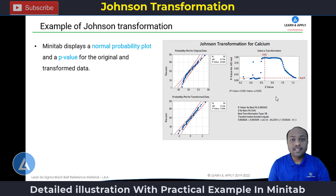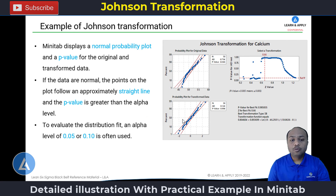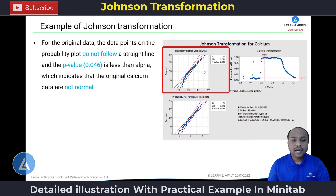The results contain two probability plots — one for the original data and one for the transform data — along with their p-values. Minitab displays a normal probability plot and a p-value for both. If the data are normal, the points on the plot follow an approximately straight line and the p-value is greater than the alpha level, which can be 0.05 or 0.10. For the original data, the points do not follow a straight line — there is some curvature.